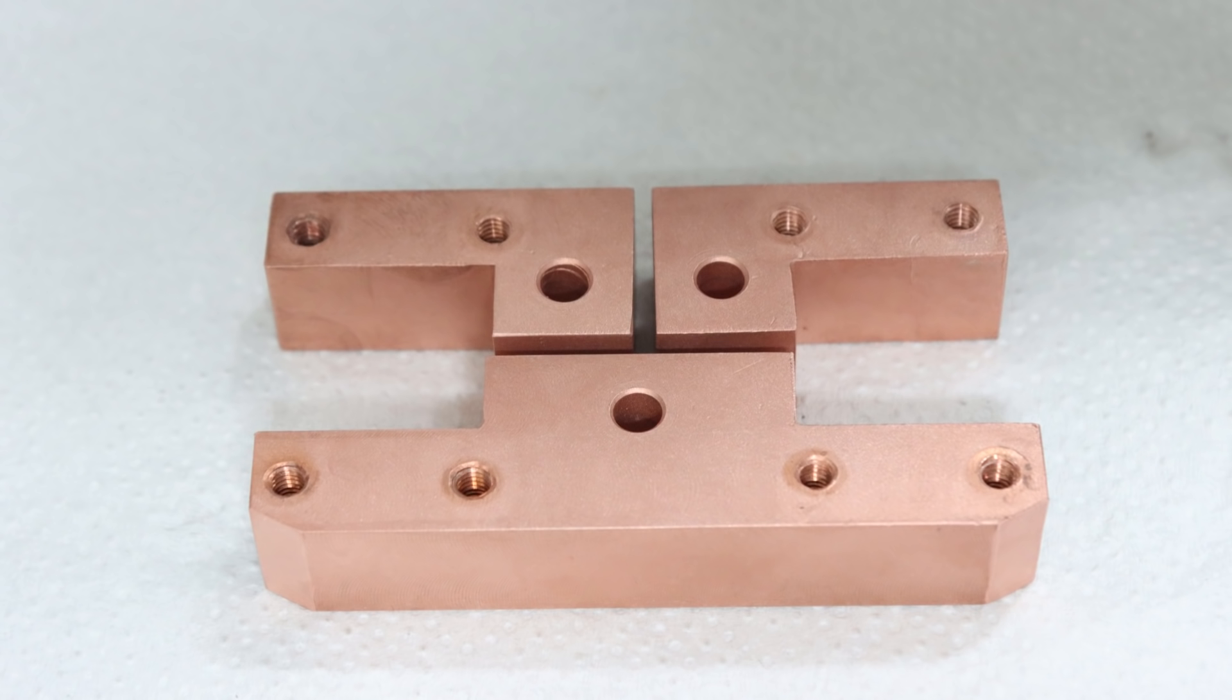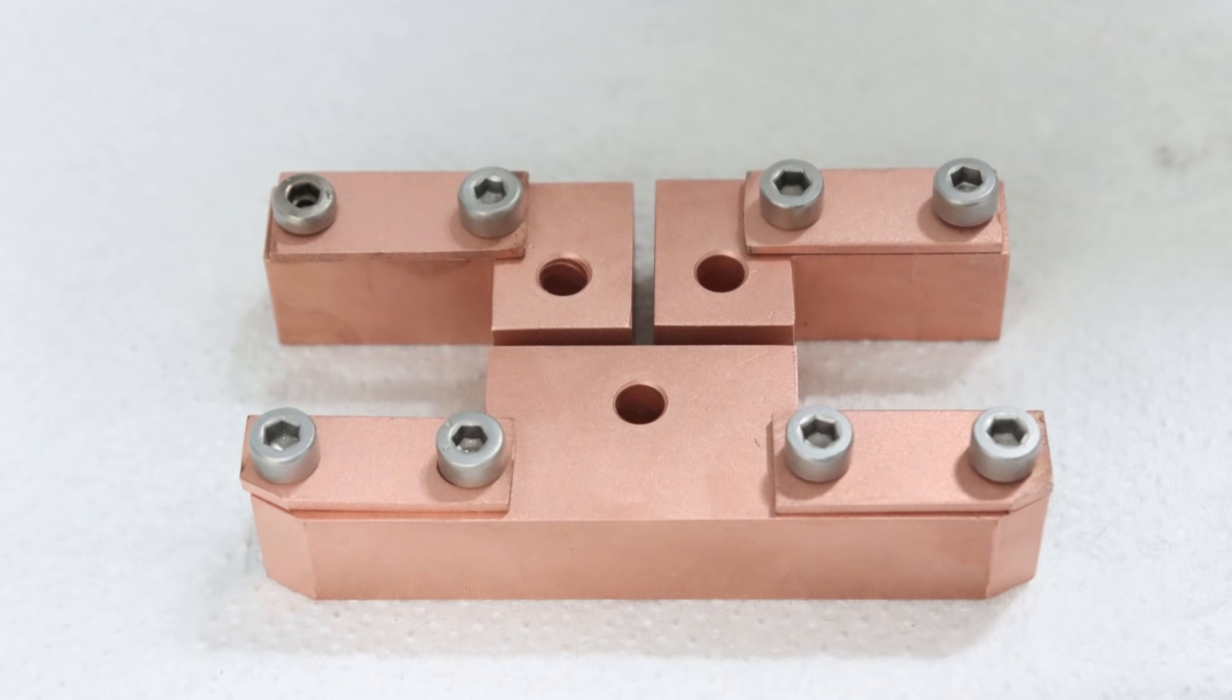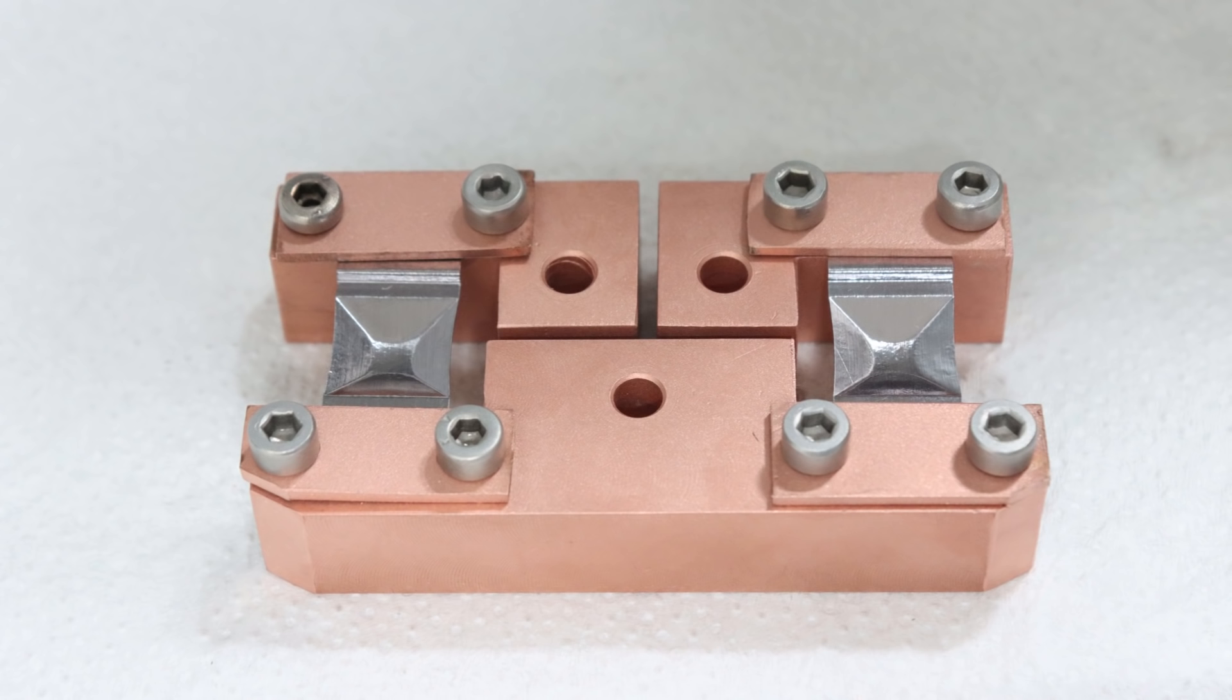The currents needed in thermal evaporation to heat up the boats are pretty substantial, generally above 100 amps. You therefore need a very good electrical conductor to connect the evaporation boats to the current source. But good electrical conductors like copper are also very good conductors of heat. So you need to cool the contacts, otherwise your setup will just melt after a while.